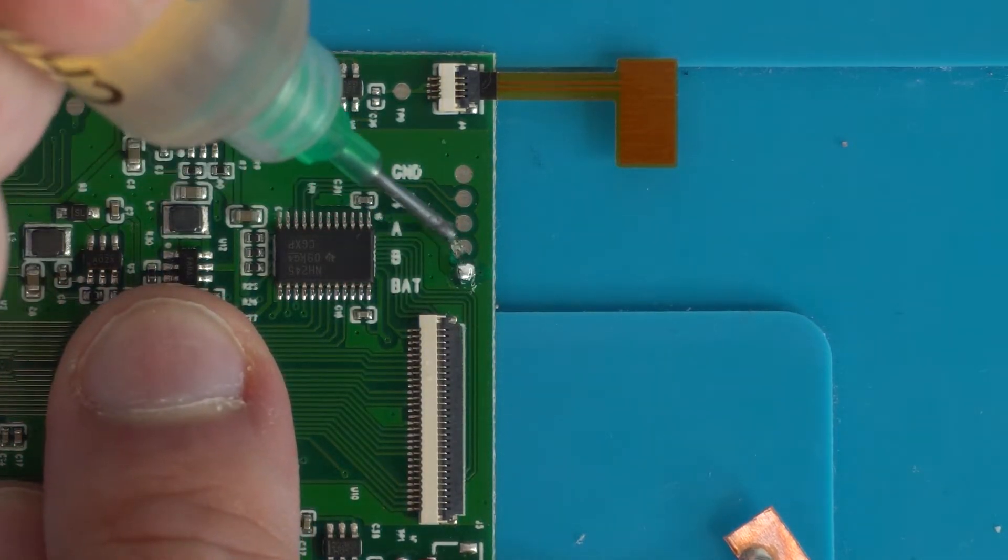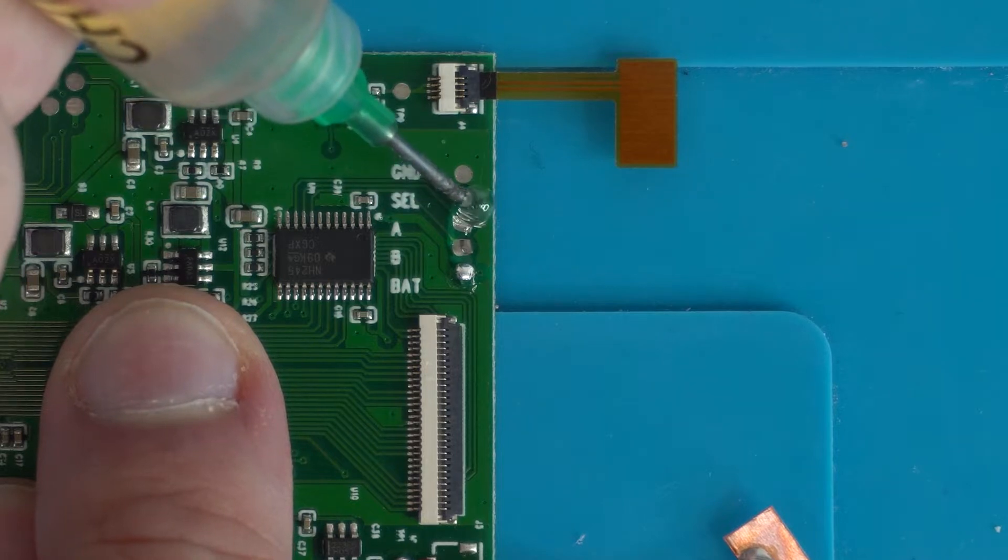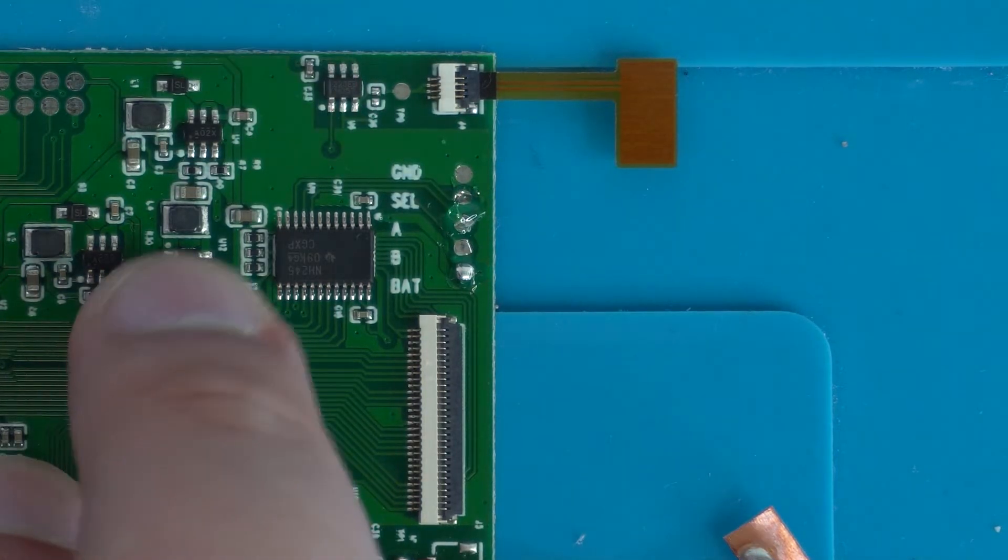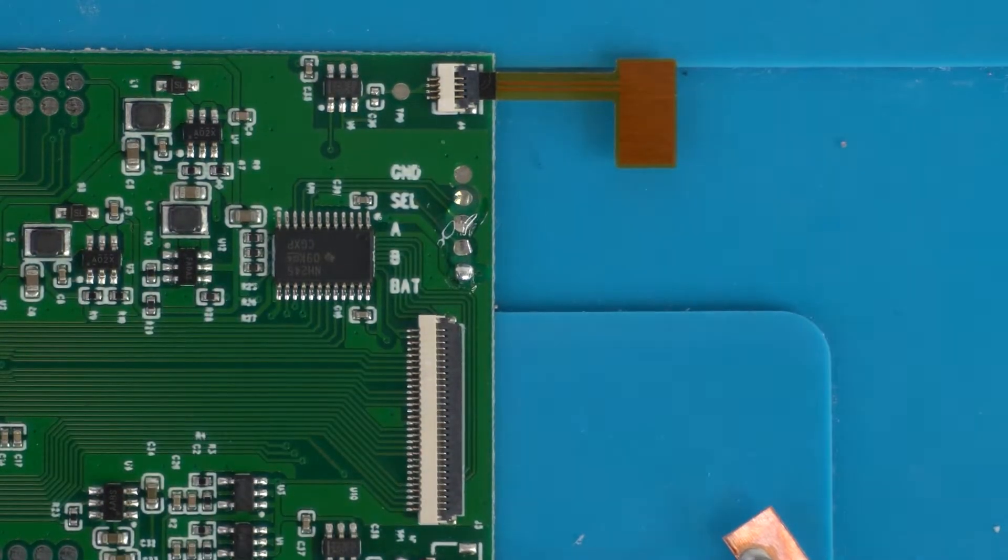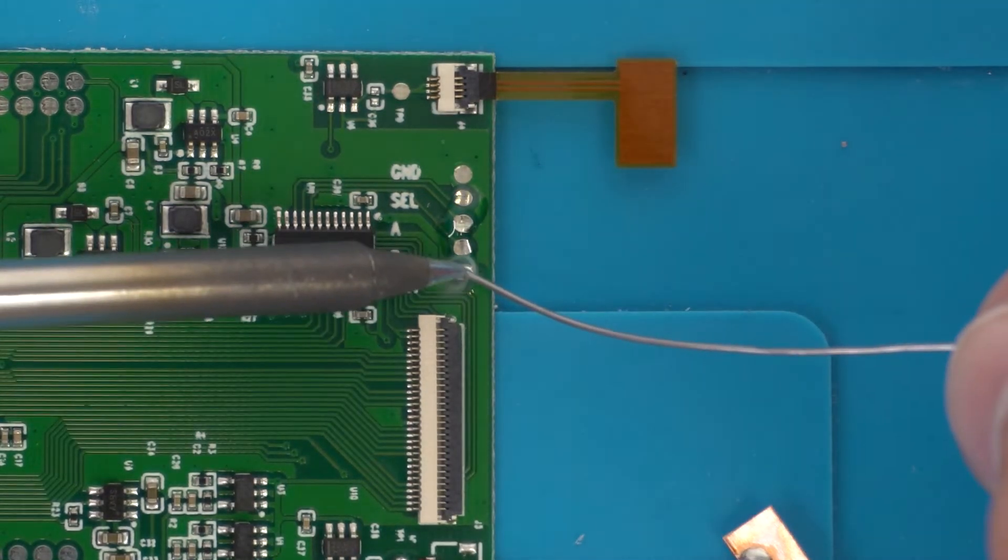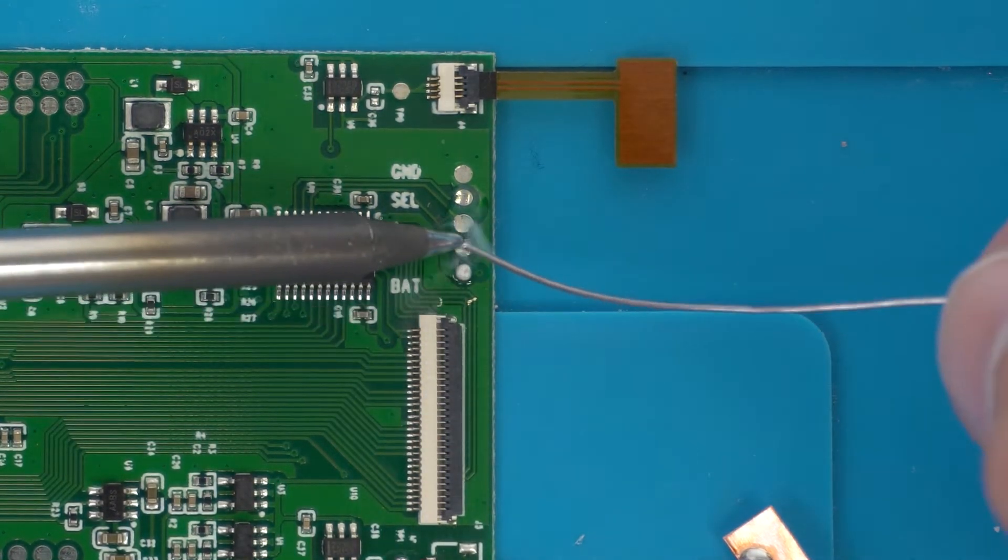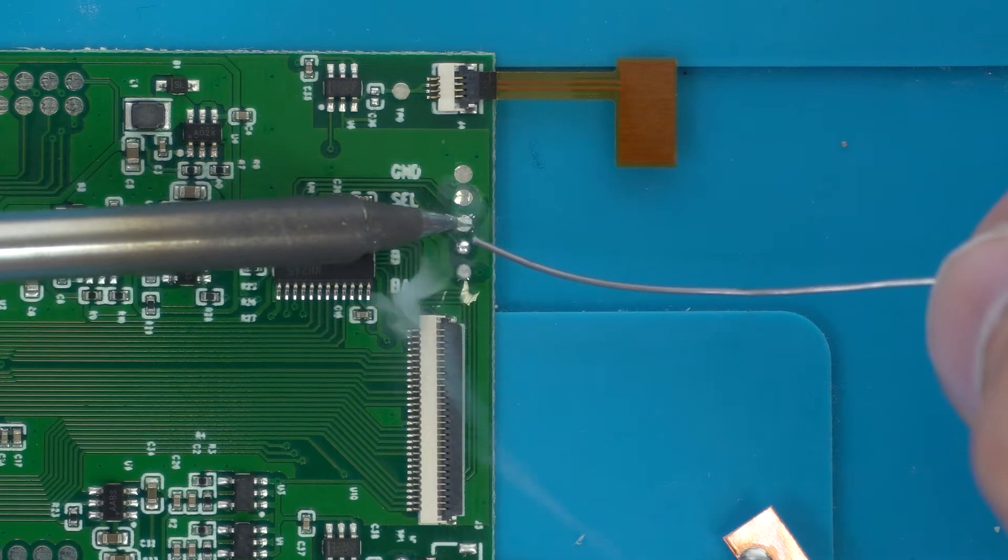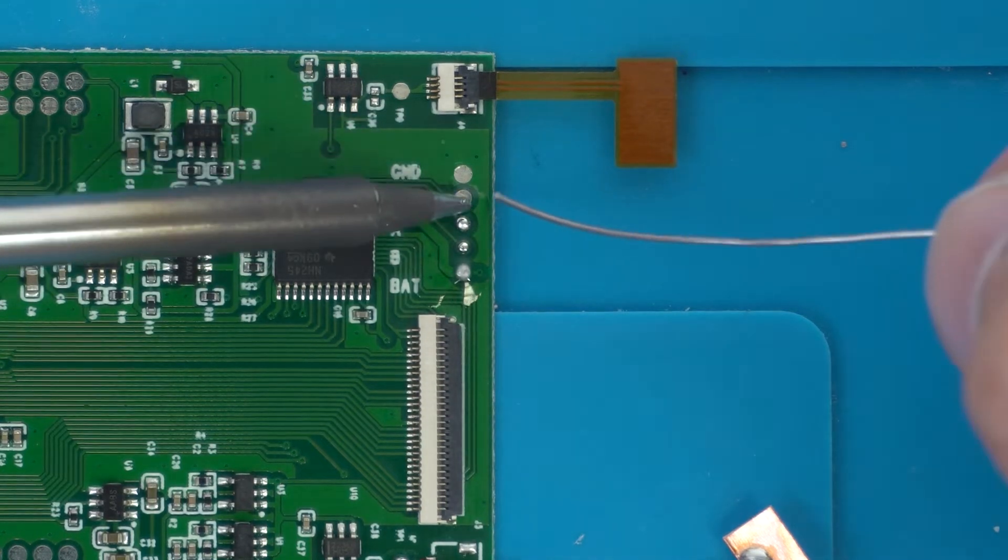After you've prepared your shell, now we can begin soldering to the control board. First, always apply flux before you solder. We'll be using four points on the board labeled select, A, B, and battery.